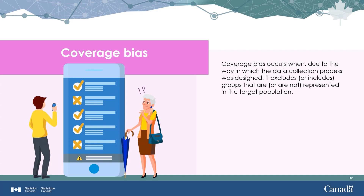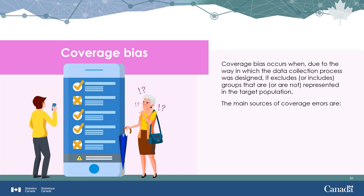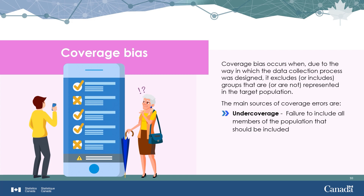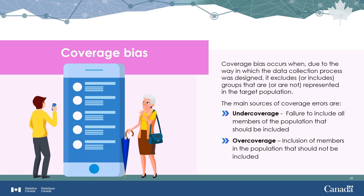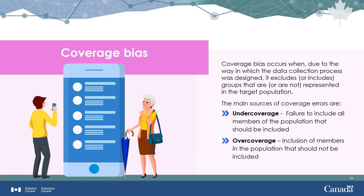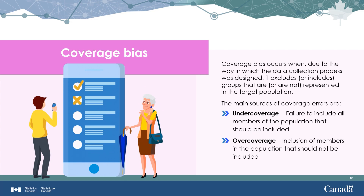Coverage bias occurs when, due to the way the data collection process was designed, it excludes groups that are, or are not, part of the target population. The main sources are under-coverage — a failure to include all members of the population that should be included — and over-coverage — inclusion of members who should not be included. For example, a survey measuring the daily spending habits of Canadians only available on smartphones will not include data from people without smartphones, creating a coverage bias.